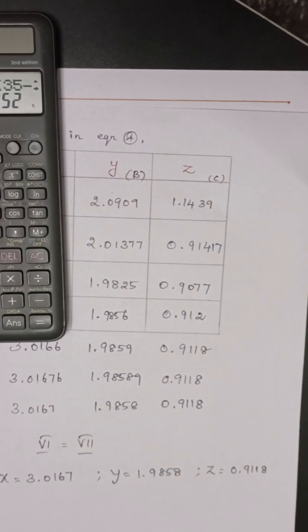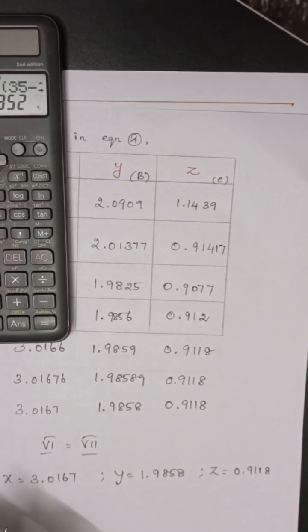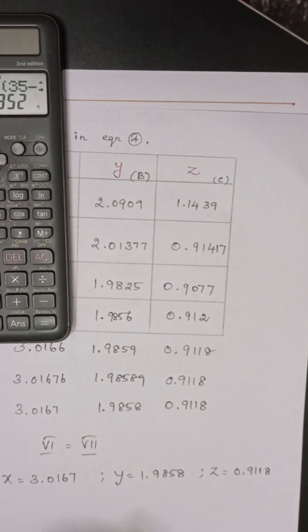So this is the Gauss-Seidel method using calculator, solved easily. This is very easiest one. Next sum we will discuss in the next class. Thank you.